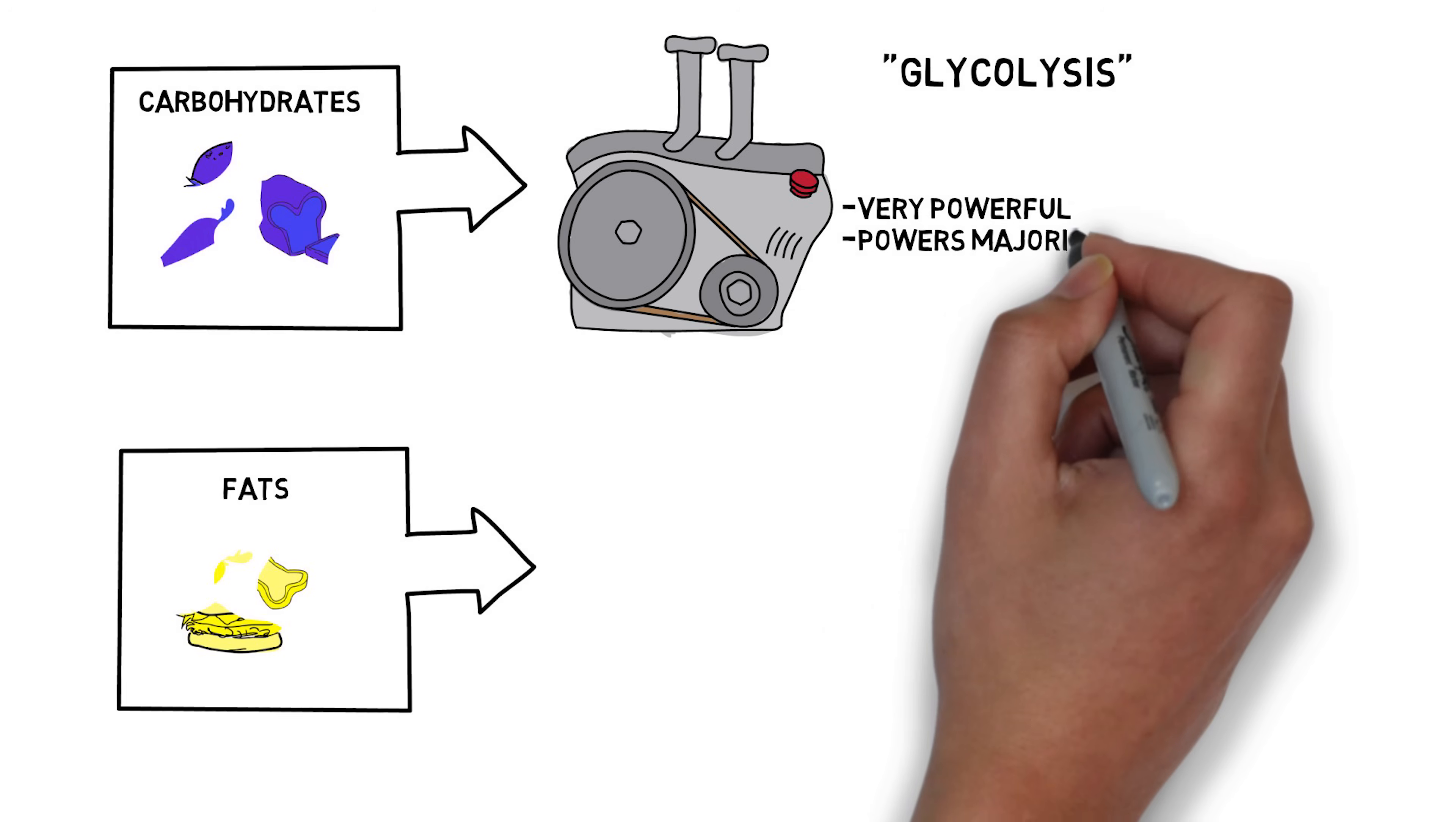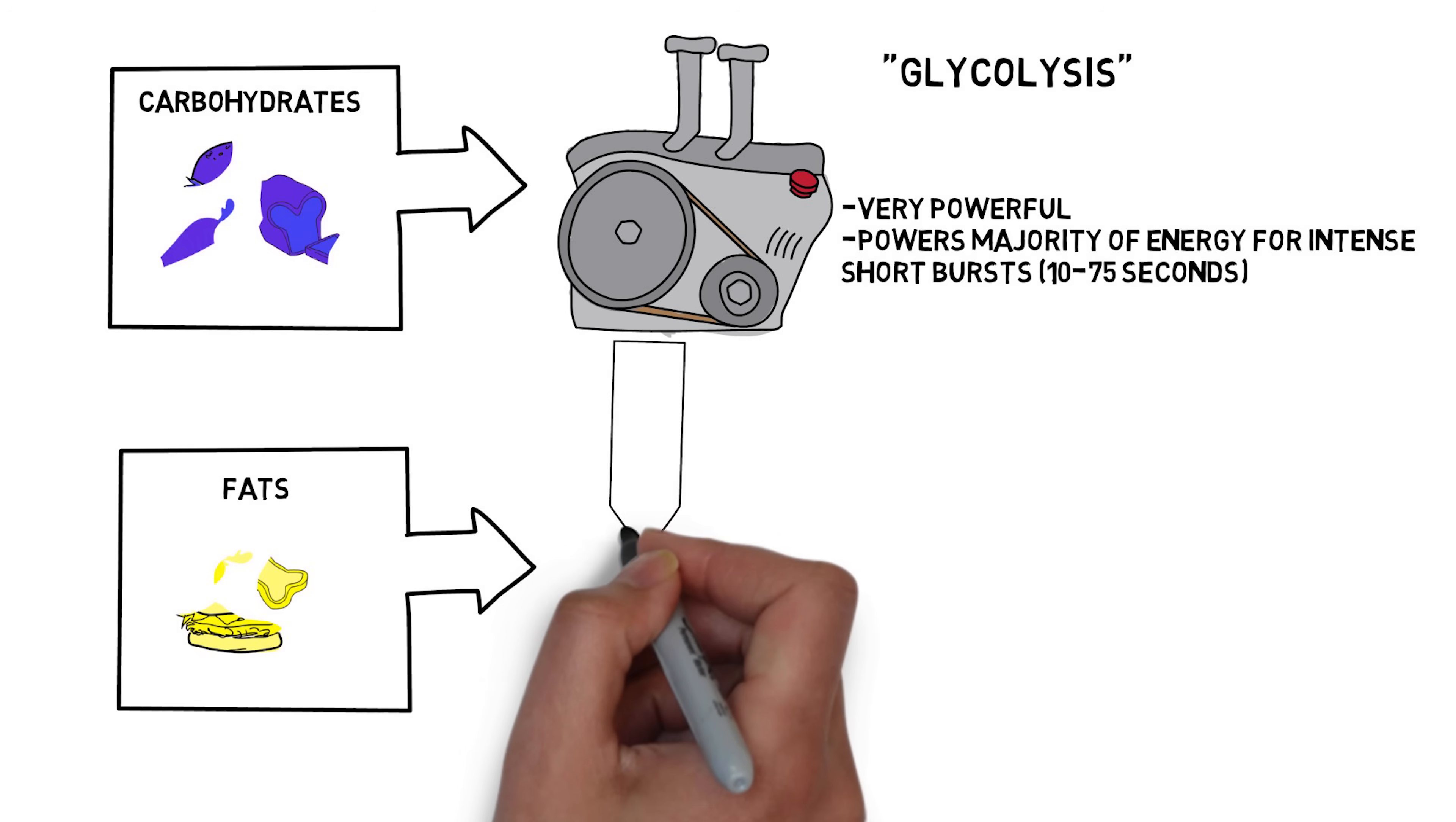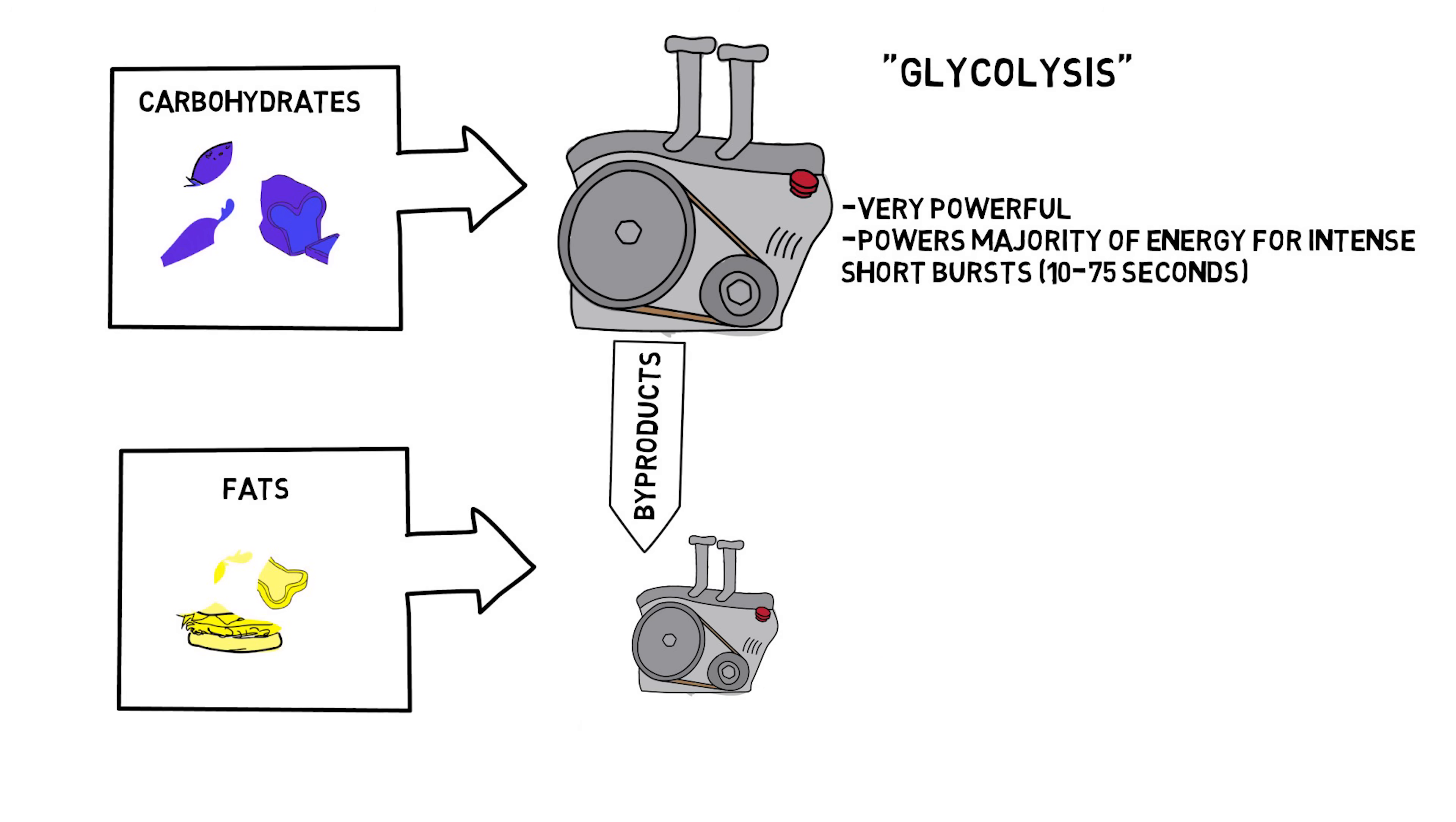Think of most cells in your body as having three power plants next door to each other. They burn different fuels, but they all output electricity, or in your body's case, ATP energy. Here's the thing though, just like diets, not all of them are created equally.